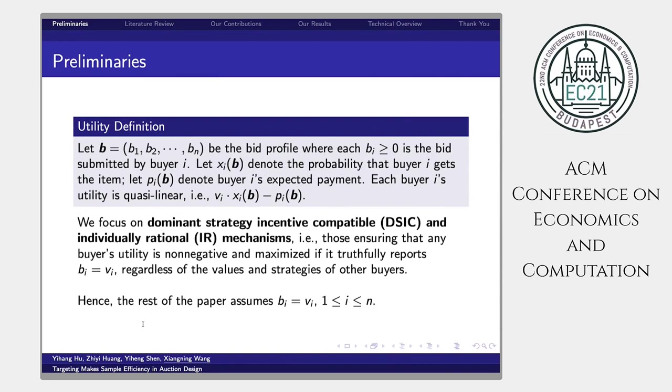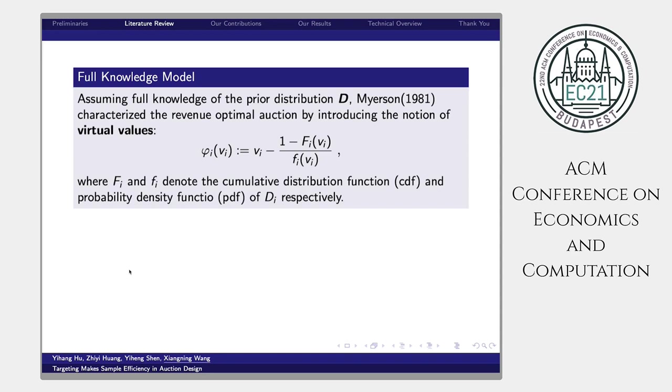Next, we move to the literature review part. The first model we consider is the full-knowledge model. Assuming full-knowledge of the prior distribution D, Myerson in 1981 characterized the revenue-optimal auction by introducing the notion of virtual values. Definition is as follows. Here, Fi is the cumulative distribution function (CDF), and small fi is probability density function.